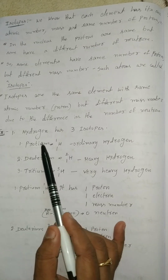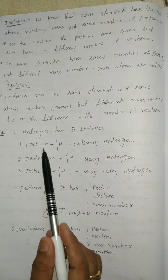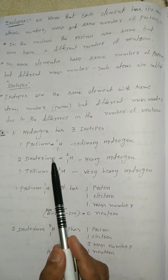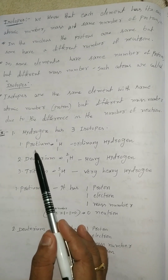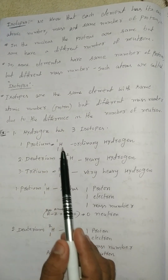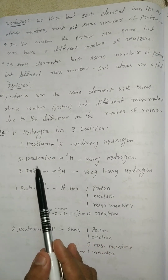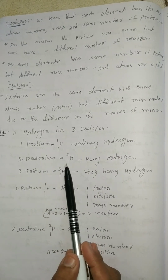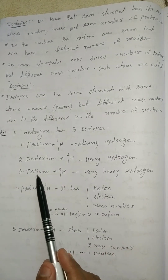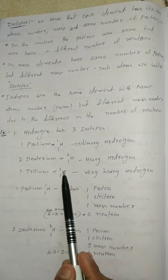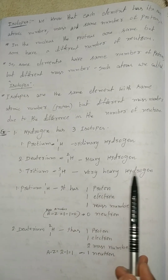Hydrogen has three isotopes: protium, deuterium, and tritium. Protium is 1H1, ordinary hydrogen. Deuterium is 1H2, heavy hydrogen. Tritium is 1H3, very heavy hydrogen.